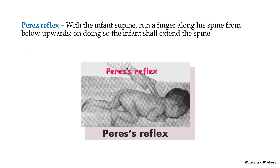What has not been demonstrated by video is the Perez reflex — here you can see it in a photograph, though it has been spelled slightly wrongly. When the infant is held supine and a finger is run along his spine from below upwards, the infant shall extend the spine.